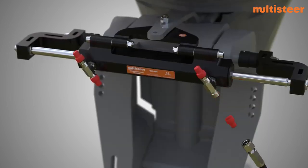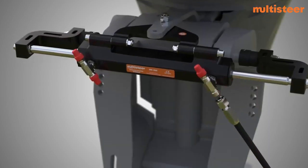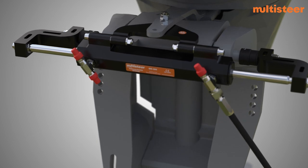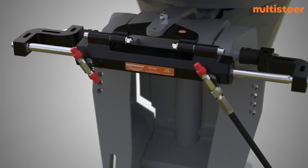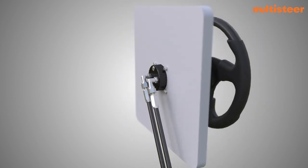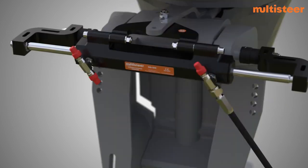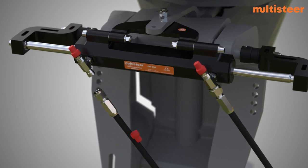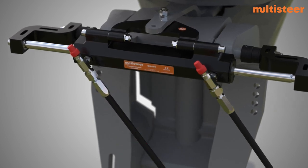Remove the thread protector cap from port side T fitting of cylinder and insert the hose fitting into it. Tighten the hex nut on the hose fitting. Repeat this step to connect the other hose from the port side elbow of the helm to the starboard side T fitting of the cylinder. Ensure that all the hose fittings are tightened properly.